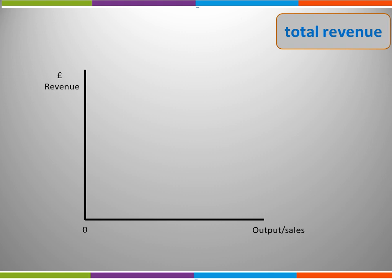Remember, if the business makes zero sales, it will also have zero revenue. Therefore, our total revenue line is going to start at the origin, at 0, and slope upwards. Remember it is important to both label the axes and the curve.